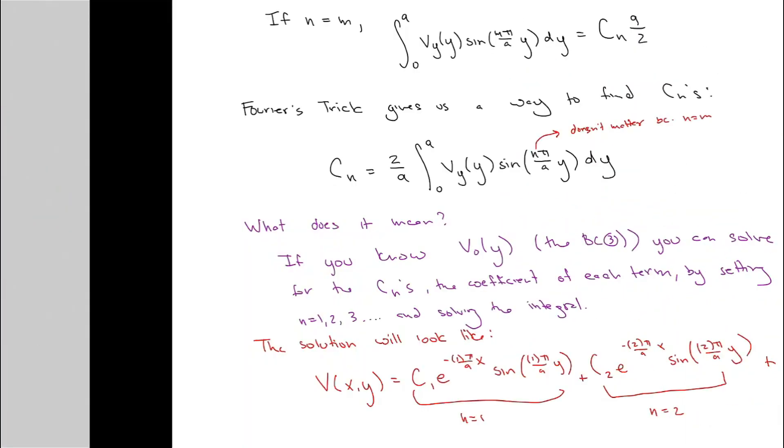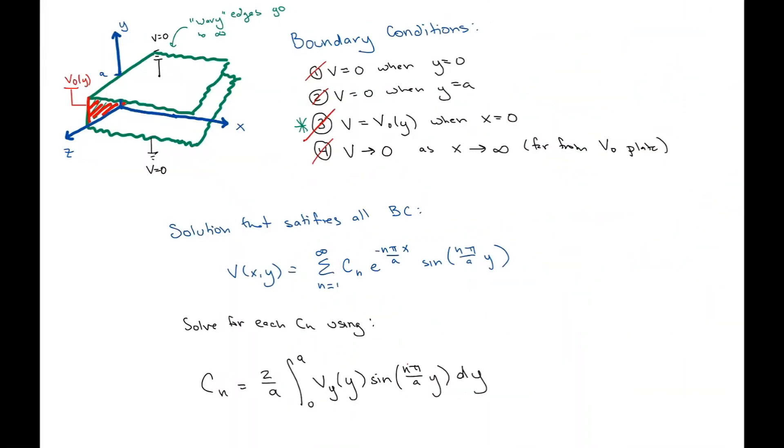We can satisfy our boundary condition at the x equals zero plate, which needs to be equal to this voltage by taking a sum of sine functions. So no matter what this function is, a sum of sine functions will be able to recreate it. Based on that, we end up finding out that our solution is going to be a sum of a bunch of different terms, where each term is going to be multiplied by a particular coefficient. The value of that coefficient is going to depend on what our voltage is at the hot plate. And we're going to figure it out by using Fourier's trick, which is doing this integral.